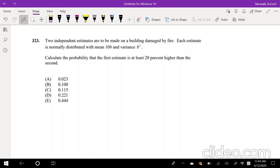Okay, so assuming that you paused the problem or you tried this out yourself, let's dive right into it. It says the two independent estimates are to be made on a building damaged by a fire. Each estimate is normally distributed. Normally distributed. Again, whenever I see the word normally distributed, I always think of Z squared. With mean 10B and variance B squared. Calculate the probability that the first estimate is at least 20% higher than the second.